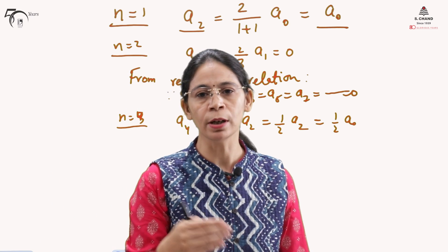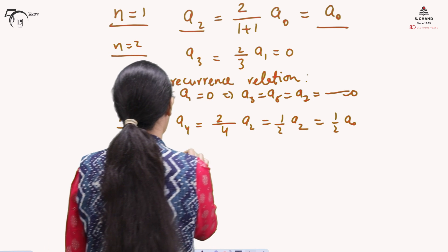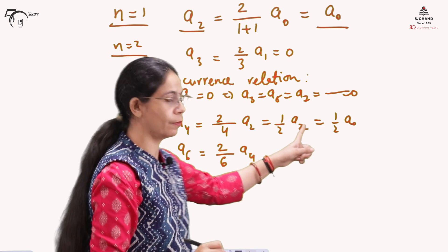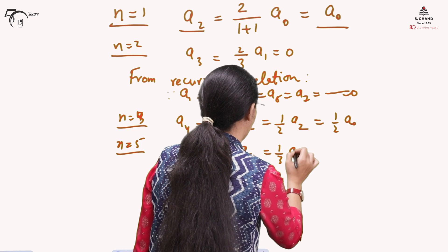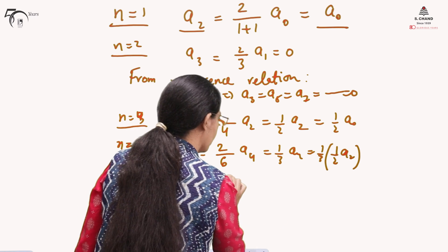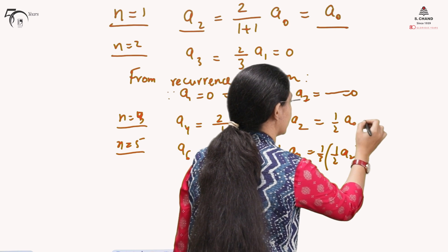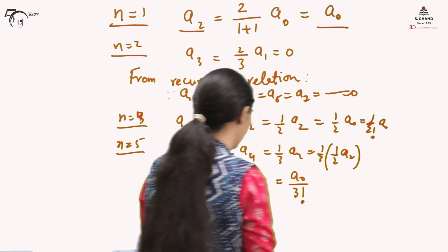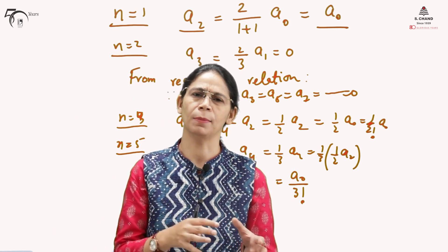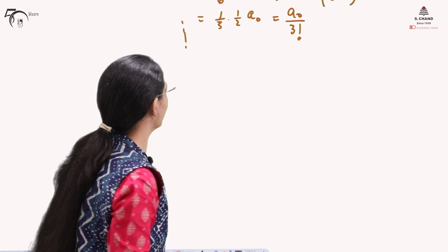All even-subscript coefficients will be written in terms of a₀. Setting n equals 5 gives a₆ equals (2/6)a₄ equals (1/3)a₄ equals (1/3)(1/2)a₂. Since a₂ equals a₀, this gives a₆ equals a₀/3! equals a₀/factorial 3. Similarly a₄ equals a₀/factorial 2. We write enough terms — at least 3 or 4 — because the odd coefficients are all zero.